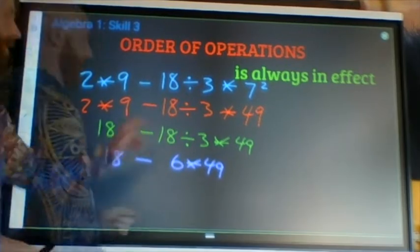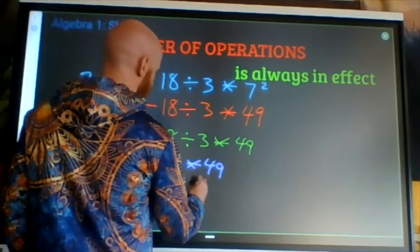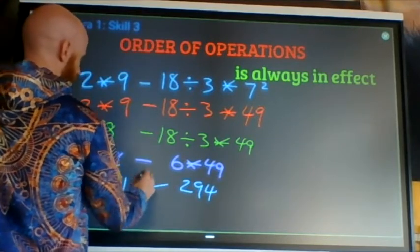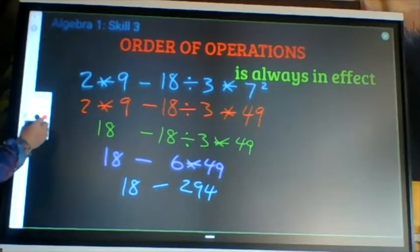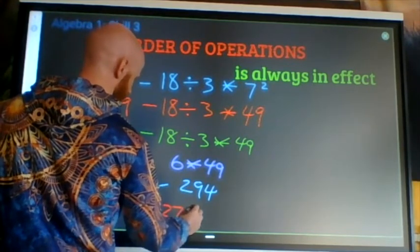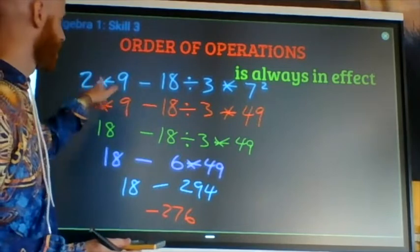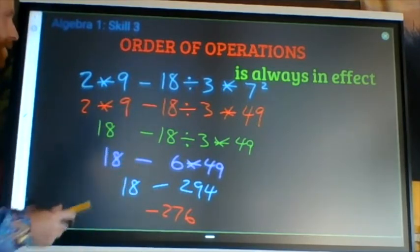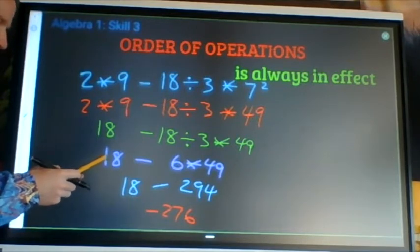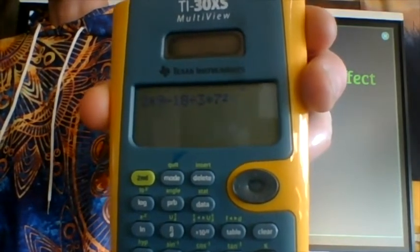18 divided by three. Six times 49. Six 50 cent pieces is $3. Minus six pennies is 294. 18 minus 294 is negative 276. I don't actually know if that's right. So double check. Type this whole line in. There's a couple places down at the bottom that I could have made mistakes. Two times nine minus 18 divided by three times seven squared. When I say type the whole line in, that's what I mean. Type the whole line.